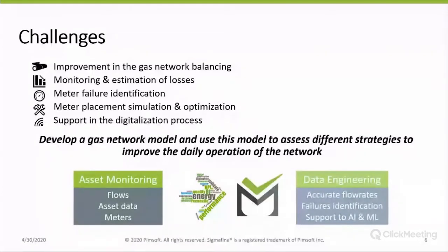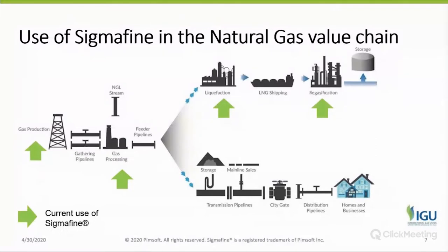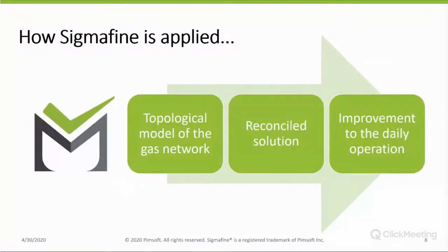I want to underline this topic because this is how we can support companies in the digitalization process. We can provide higher data quality to the artificial intelligence and machine learning solutions already implemented inside the company. The use of Sigma Fine is quite wide across different sectors, but when we focus on the natural gas value chain, Sigma Fine is currently used in gas production, gas processing, and liquefaction and gasification areas. We are working with companies in the transmission and distribution sector to close the value chain.